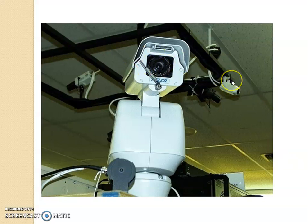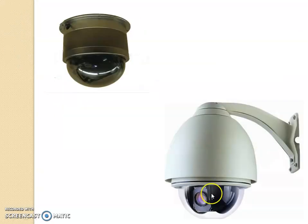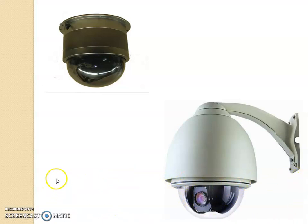Sometimes a wiper is included so that any moisture or humidity on the screen can be wiped out. PTZ dome is similar to a PTZ camera — the only difference is the entire unit comes with an enclosed dome. The camera can tilt 90 degrees and rotate 360 degrees, so the entire hemisphere can be covered.